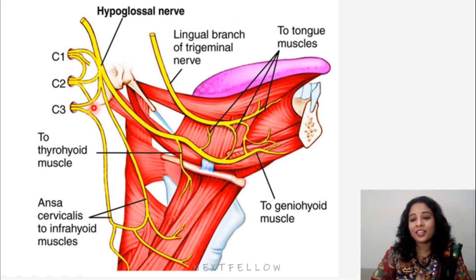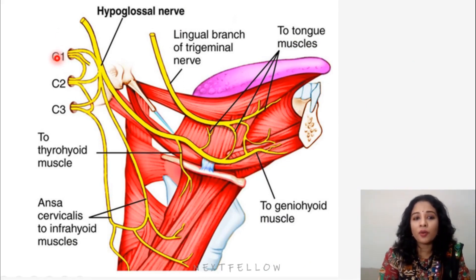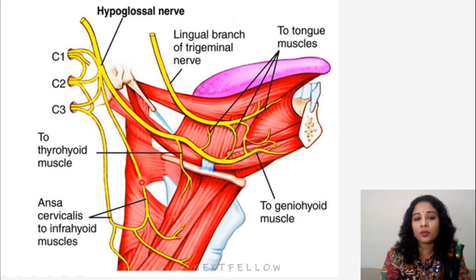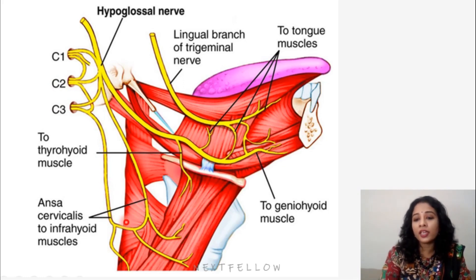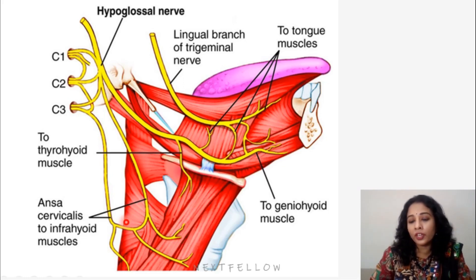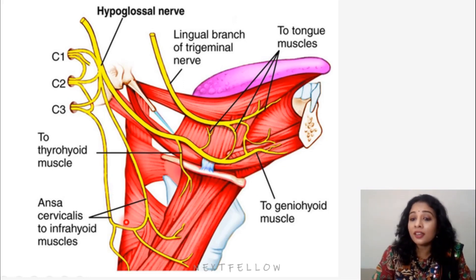Ansa cervicalis supplies several infrahyoid muscles. It is formed by C1, C2, and C3 nerve roots, alongside the 12th cranial nerve — the hypoglossal nerve. The C1 nerve joins the hypoglossal nerve and its fibers run along with it, continuing to form the descending hypoglossal. C2 and C3 continue and join to form the descending cervicalis. The loop formed is called the ansa — in anatomy, a loop is called an ansa. The ansa cervicalis is located within the anterior wall of the carotid sheath, inside the carotid triangle — it is a content of the carotid triangle, not the muscular triangle.